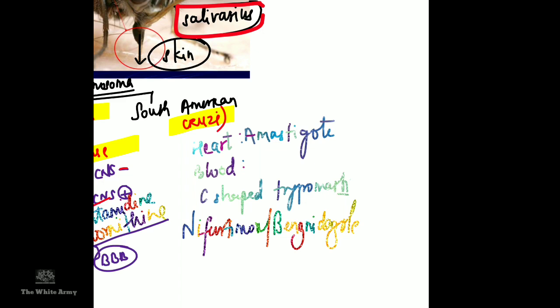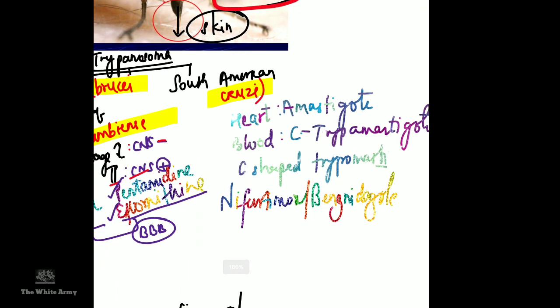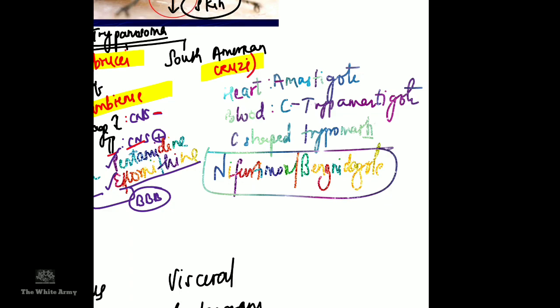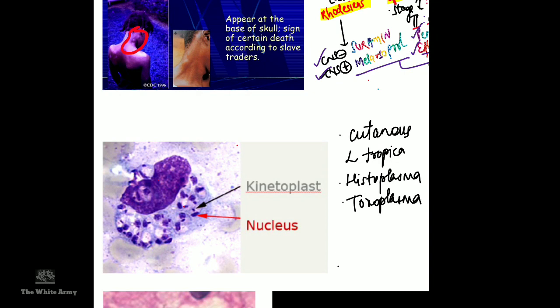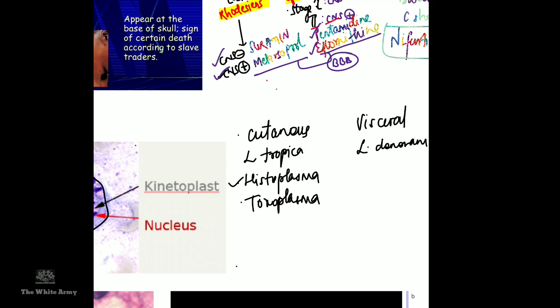The next organism shows multiple intracytoplasmic inclusions. When we see such organisms, we think of Histoplasma, Toxoplasma, and Leishmania. In Leishmania, these bodies are called dot-and-dash bodies. Leishmania can be cutaneous type (Leishmania tropica) or visceral type (Leishmania donovani).